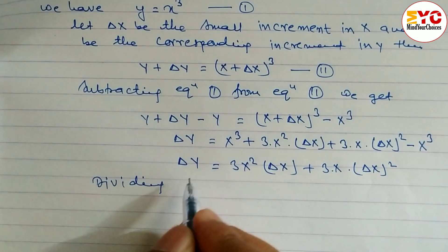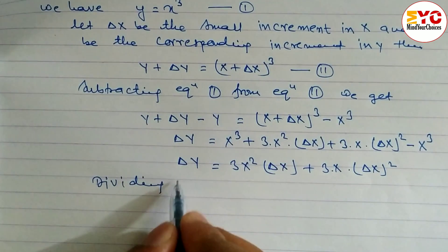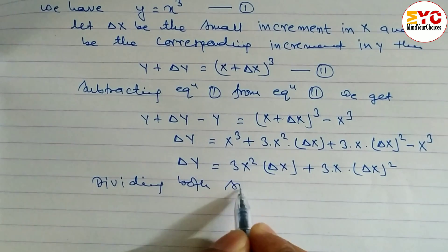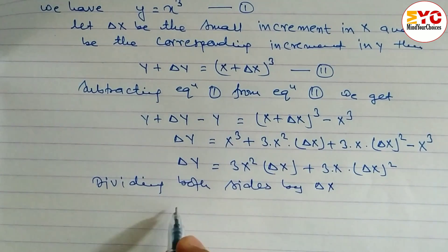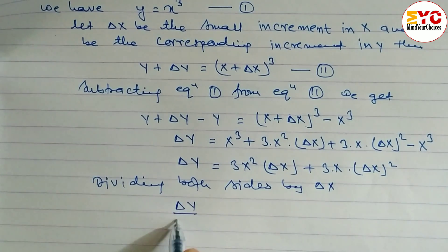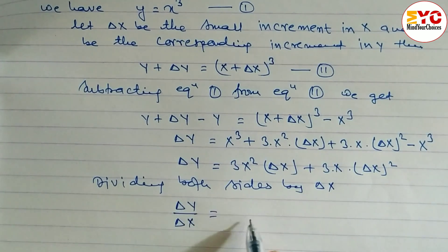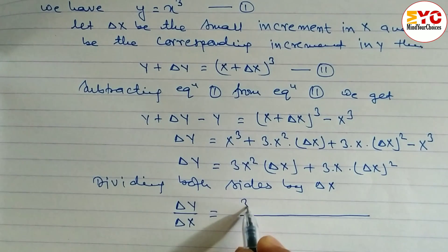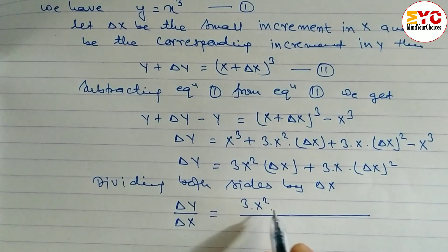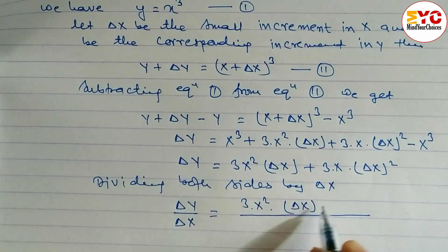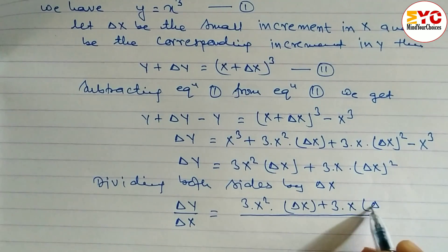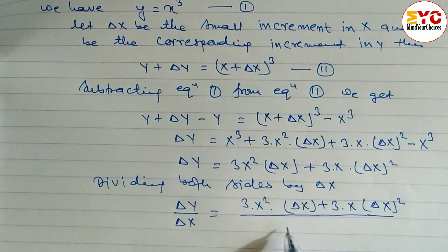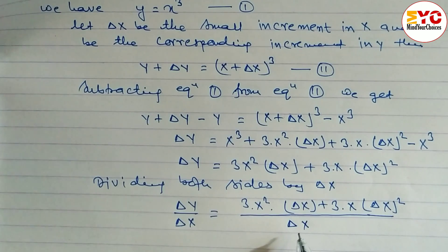Dividing both sides by del x. We have del y by del x is equal to 3x squared del x plus 3x del x whole squared, all divided by del x.